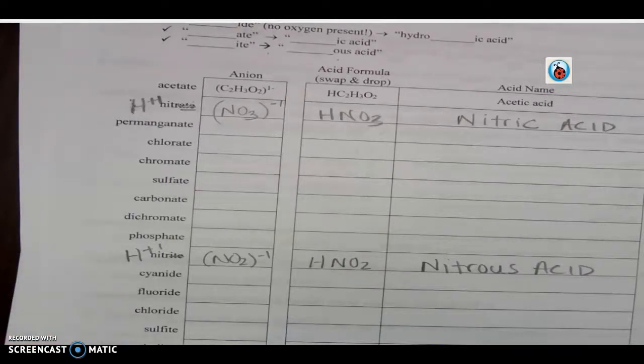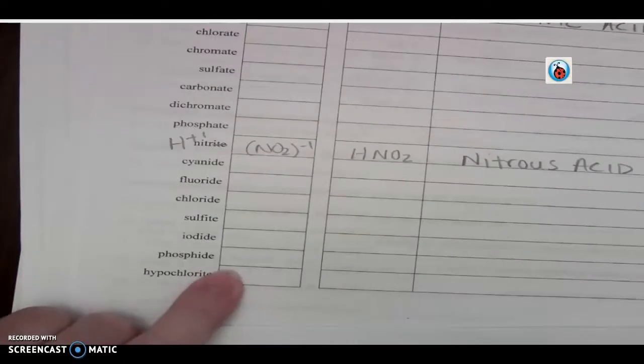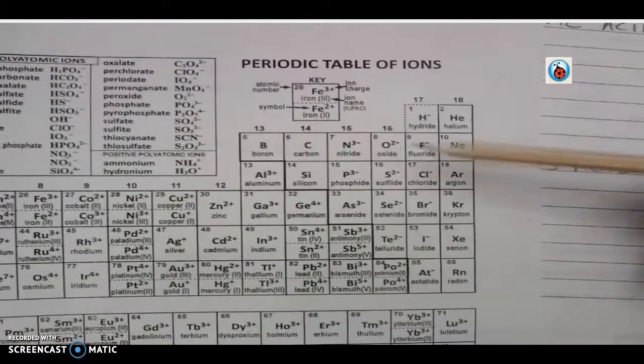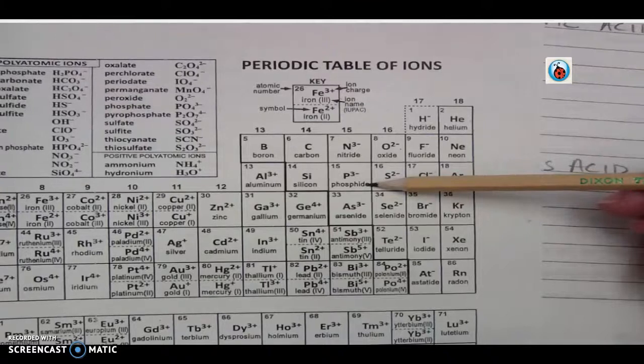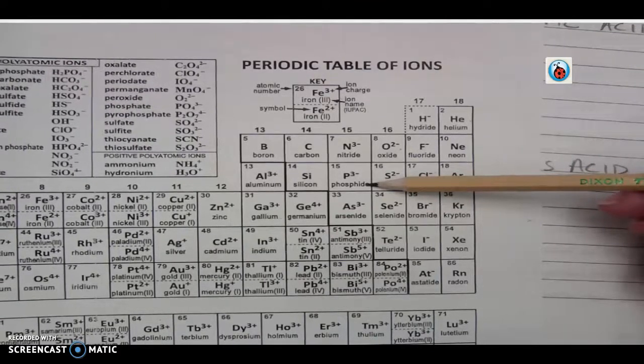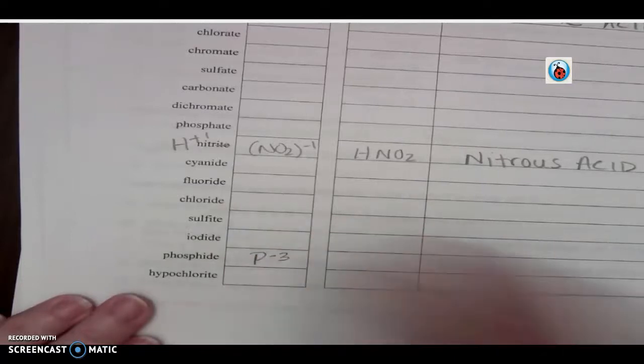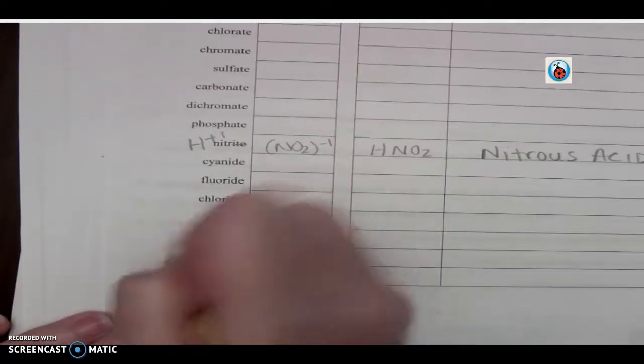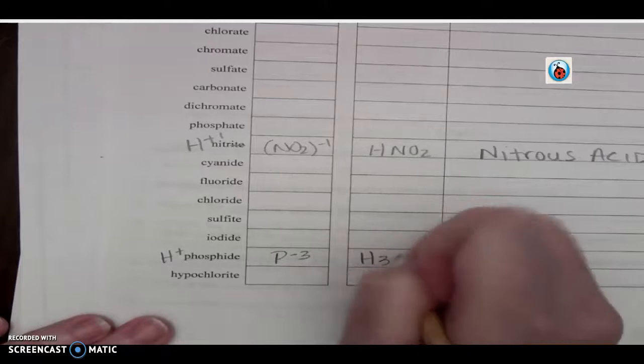Let's look at the last one - phosphide. That -ide ending is usually my clue that it's over here with this bunch. And there is phosphide - P minus three. Negative three charge. And again, who's he going to bond with? Hydrogen. So when we swap and drop with that, what do we get? We get H3P.